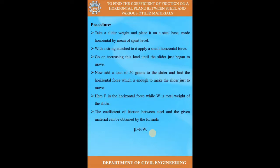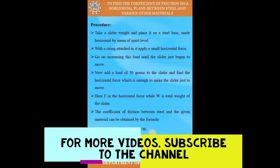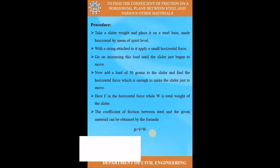For the procedure, take a slider weight and place it on a steel base made horizontal by means of a spirit level. Rotate the base to zero on the scale and check with the spirit level whether it is level. Then place the slider weight on the steel base, tie it to a string, fix it with the help of a pulley, and tie a hanger at the other end of the string. Apply a small horizontal force by putting some weight on the hanger.